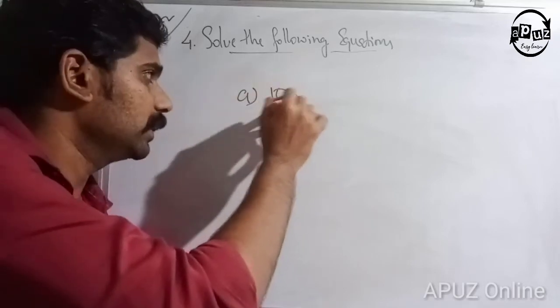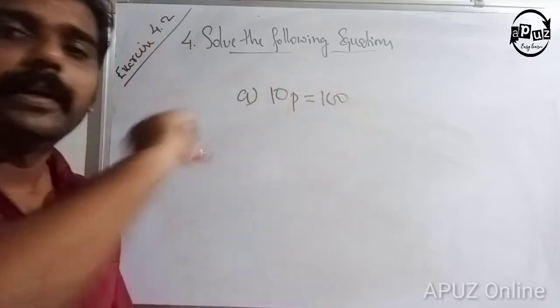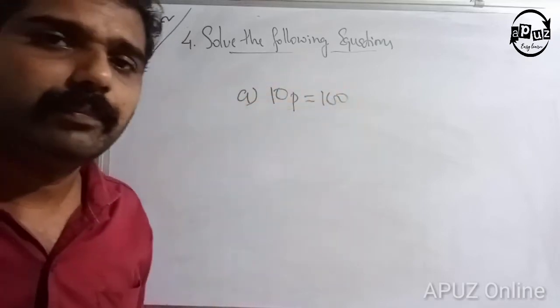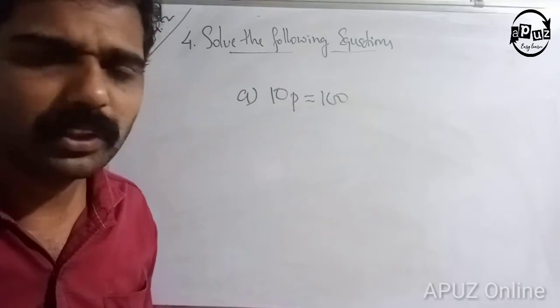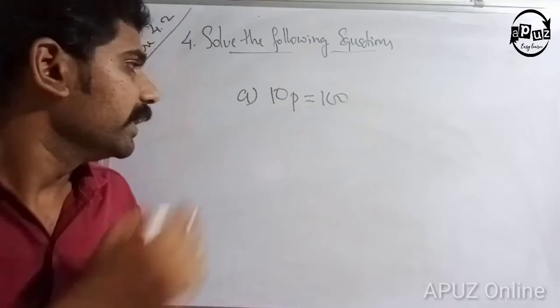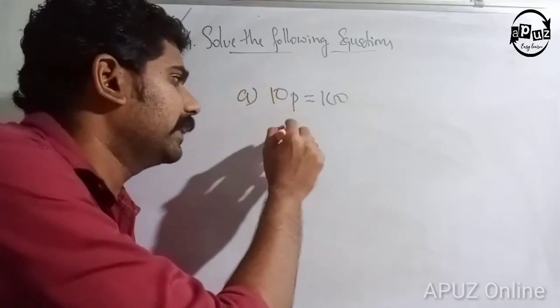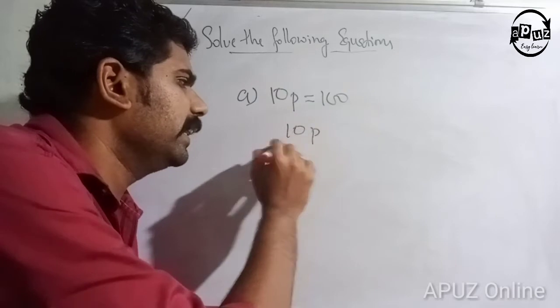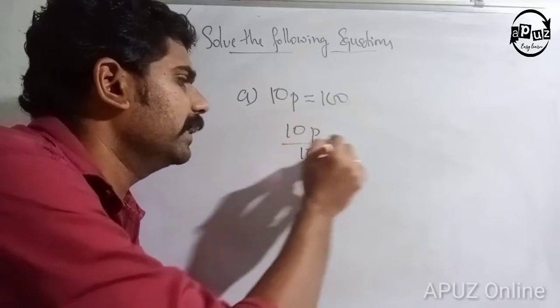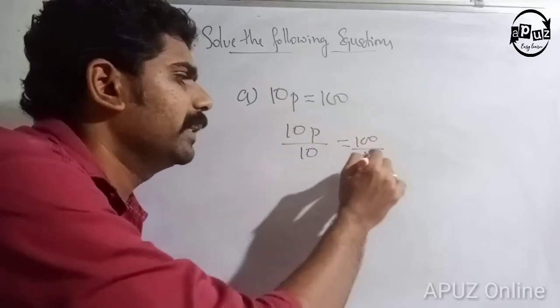First question: 10p is equal to 100. What do I do? 10p divided by 10 is equal to 100 divided by 10.